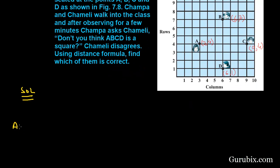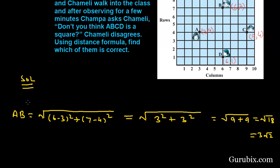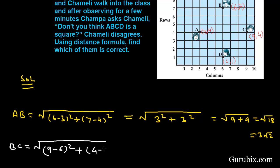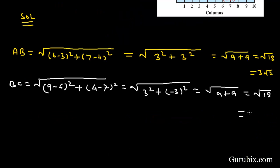First we shall find the distance between points A and B. AB equals square root of (6 minus 3) squared plus (7 minus 4) squared, which equals square root of 3 squared plus 3 squared, that is square root of 9 plus 9, which equals square root of 18, which equals 3√2. Now we shall find the distance between points B and C. BC equals square root of (9 minus 6) squared plus (4 minus 7) squared, which equals square root of 3 squared plus (minus 3) squared, that is square root of 9 plus 9, which equals square root of 18, which equals 3√2.